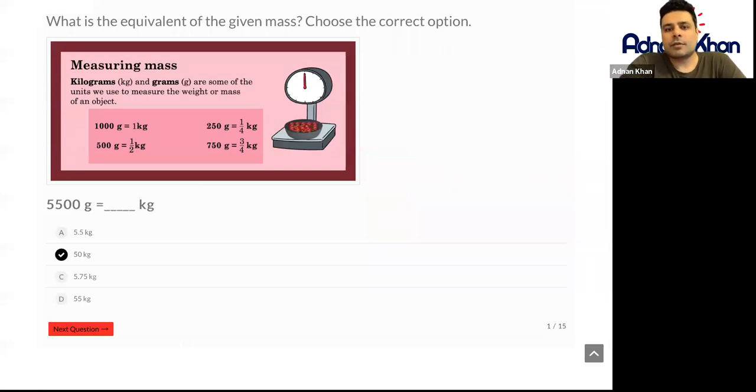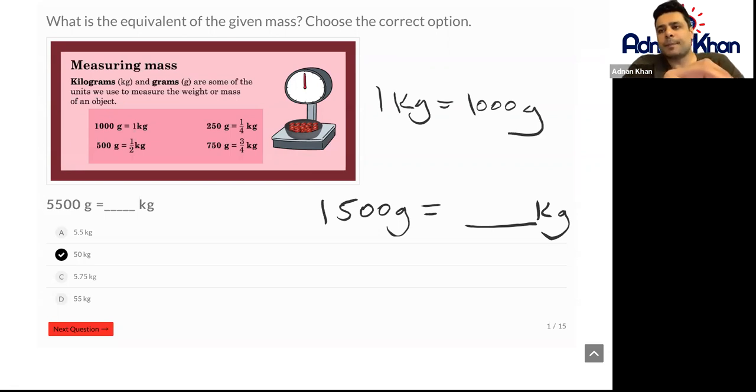So if the example is 1500 grams, we need to turn this into kilograms. Now we know that in one kilogram there are 1000 grams. And 1000 has three zeros.